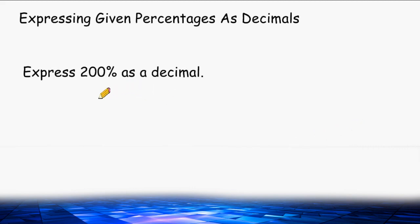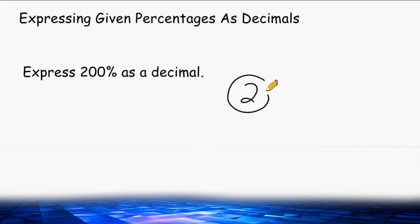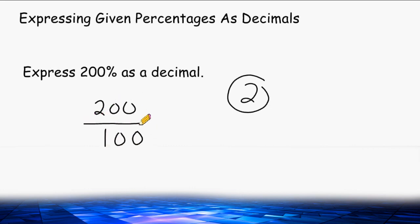Because 100% equals one whole, 200% must equal two wholes. Writing 200% as a fraction gives us 200 out of 100, which is an improper fraction that simplifies to the number 2.